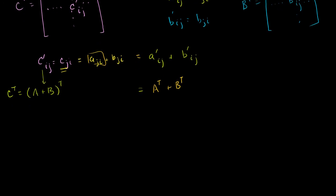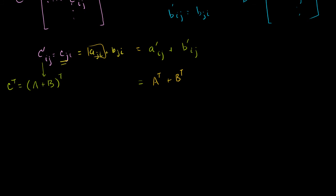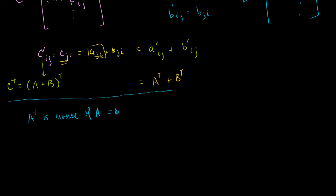Let's do one more and finish up our major transpose properties. Let's say A inverse is the inverse of A. That means A times A inverse is equal to the identity matrix, and A inverse times A is also equal to the identity matrix — assuming these are n by n matrices, so it's the n-dimensional identity matrix.